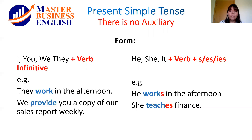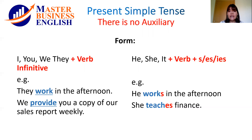Let's see some examples. 'They work in the afternoon.' The verb 'work' is in infinitive. 'We provide you a copy of our sales report weekly.' The verb 'provide' is again in infinitive. On the other side, when we have the subject pronouns he, she, or it, the verb ends with S, ES, or IES.